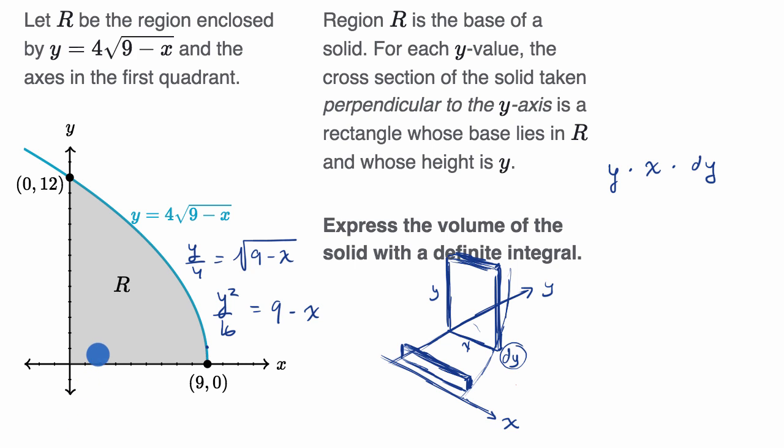And then, let's see, we could multiply both sides by negative one. So negative y squared over 16 is equal to x minus nine. And now we could add nine to both sides and we get nine minus y squared over 16 is equal to x. And so we could substitute that right over there.